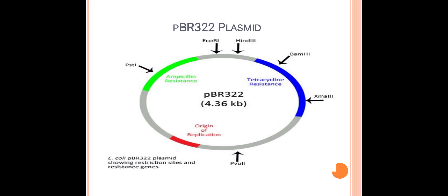Now let's see the structure of plasmid PBR322. P refers to plasmid, BR represents the discoverers Bolivar and Rodriguez, and 322 is the identifying number. It is a constructed plasmid and it possesses a region called the origin of replication, marked in red. It also possesses two antibiotic-resistant marker genes — one for ampicillin and another for tetracycline. You can insert your desired gene into either one of these resistance genes. After cloning, multiple copies are produced in the host cell, and recombinants are identified by insertional inactivation, that is, loss of antibiotic resistance.